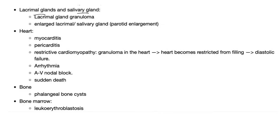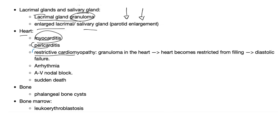Lacrimal glands and salivary glands can develop granulomas; you can see enlarged lacrimal or salivary glands including parotid enlargement. In the heart, you can have myocarditis, pericarditis, and restrictive cardiomyopathy. Sarcoidosis can lead to two restrictive problems: restrictive lung disease and restrictive cardiomyopathy. You can also see arrhythmia, AV block, and sudden death.